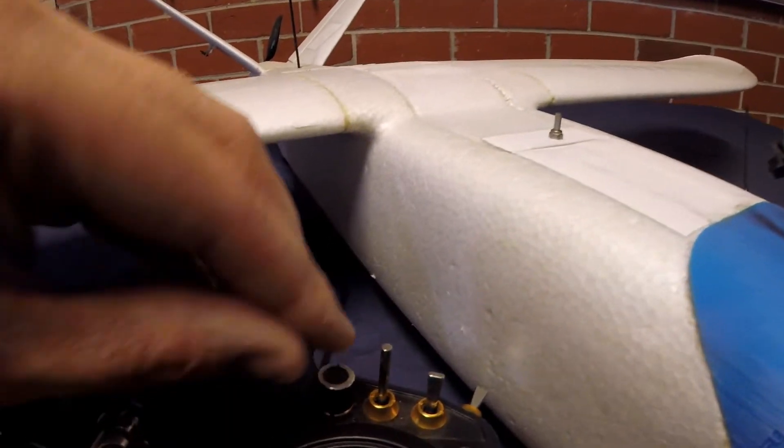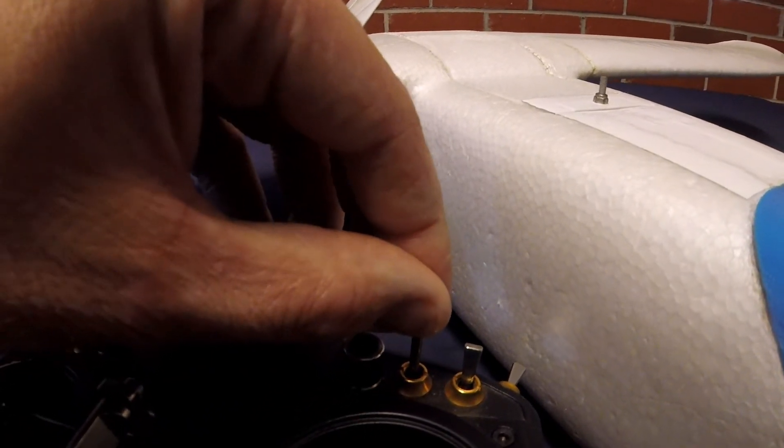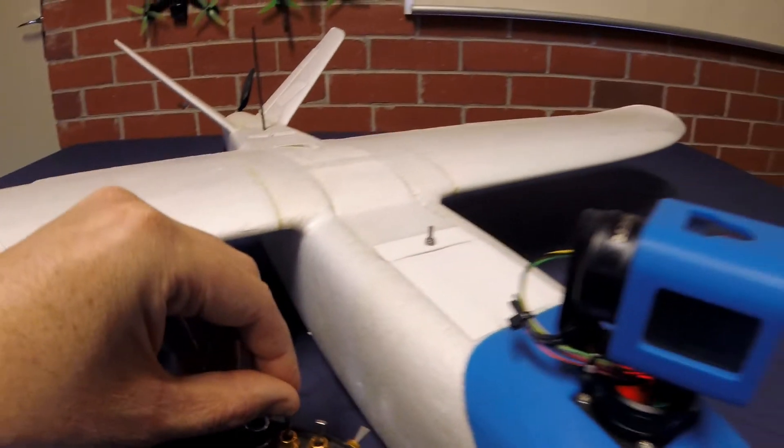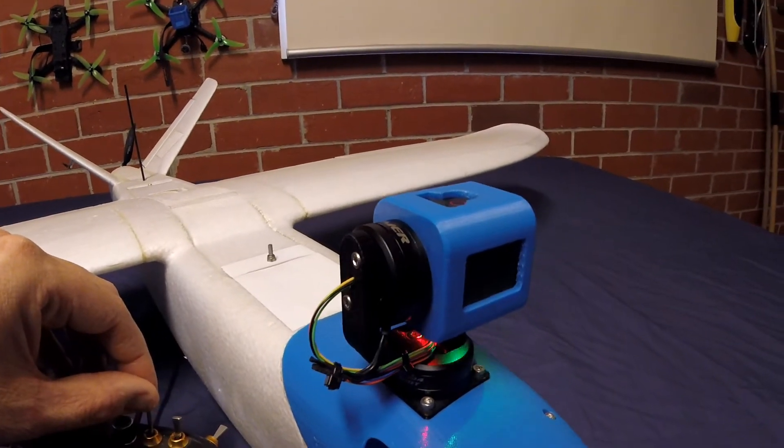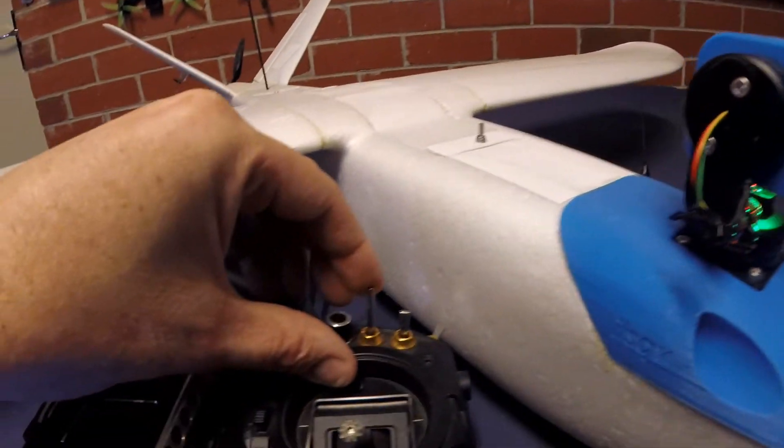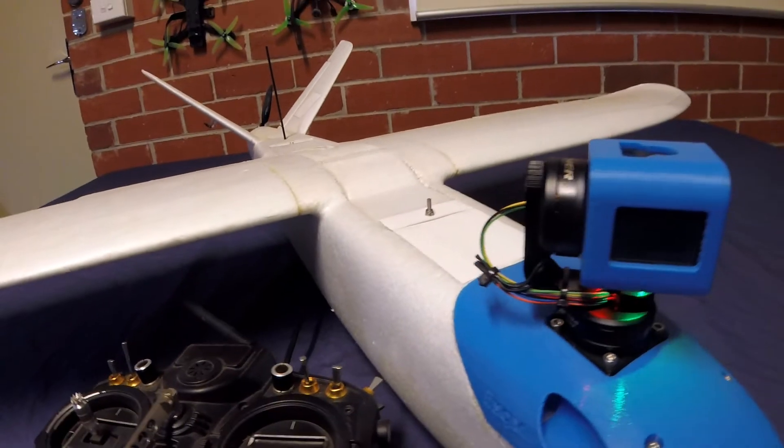I also use this switch here for two preset modes. So flick it up and the gimbal will look left. And then flick it down and the gimbal will look to the right.